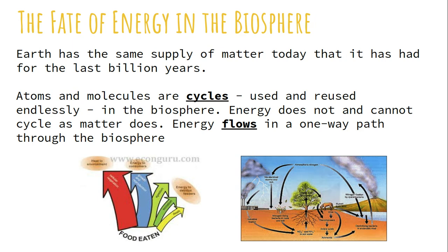There is a difference between a cycle and flowing. Matter — animals and plants — cycles: they die and their physical matter is put back into the ground and reused. Energy, though, is only a one-way path. The energy we receive from what we eat, we use, and if someone were to eat us, they would use the energy from us. As it gets passed up the food chain, it gets less and less and less — it doesn't cycle back.